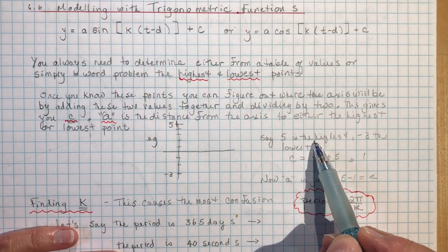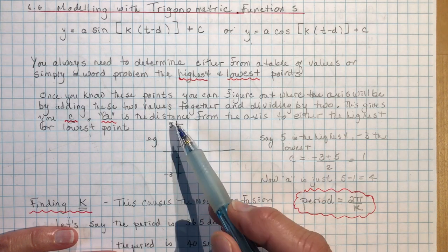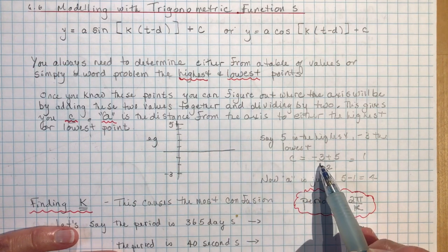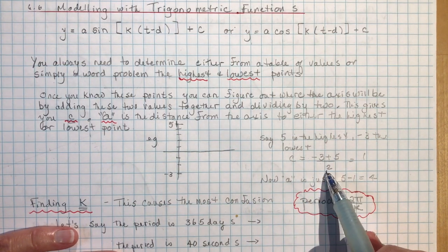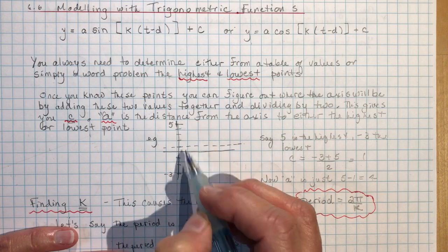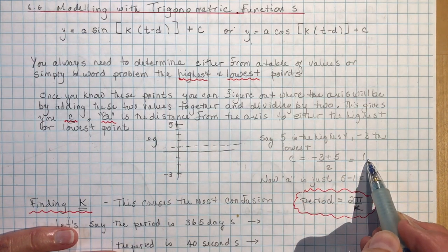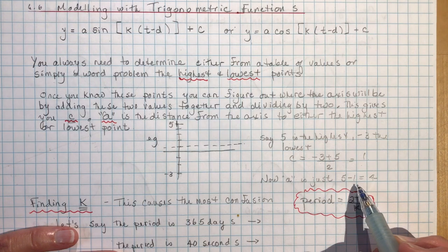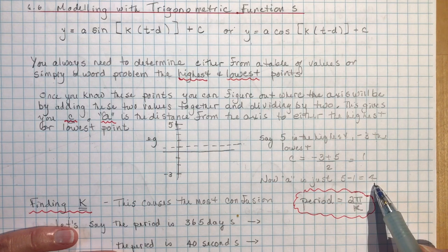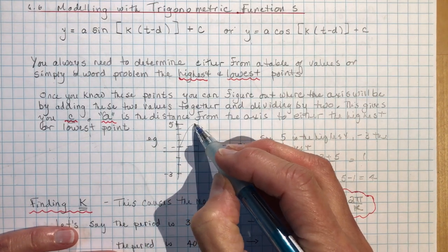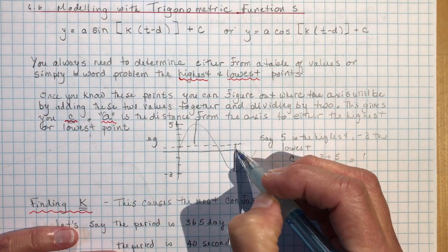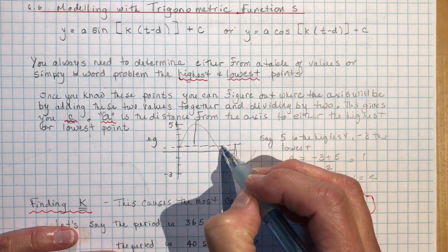Here's a quick example. If 5 is the highest and minus 3 is the lowest, the axis is right in between these two points. So I add them: minus 3 plus 5 is 2, divided by 2 gives me 1. So the axis is at 1, right in the middle between the highest and lowest points. To find A, I subtract the axis from the highest point: 5 minus 1 is 4. So the amplitude is 4.